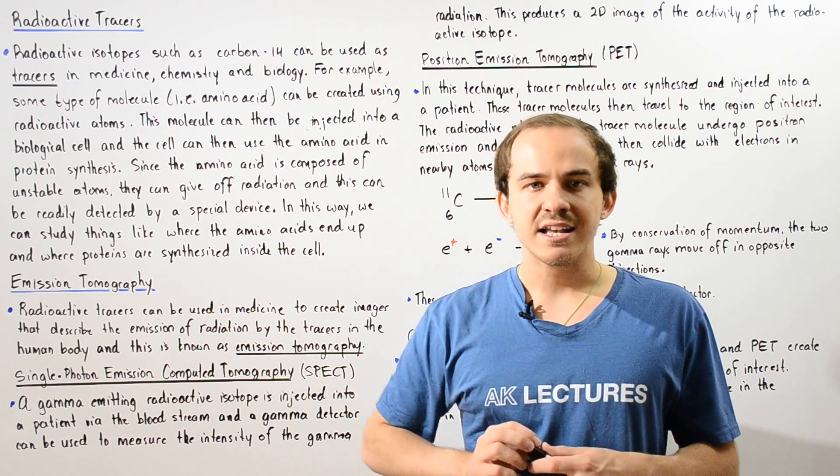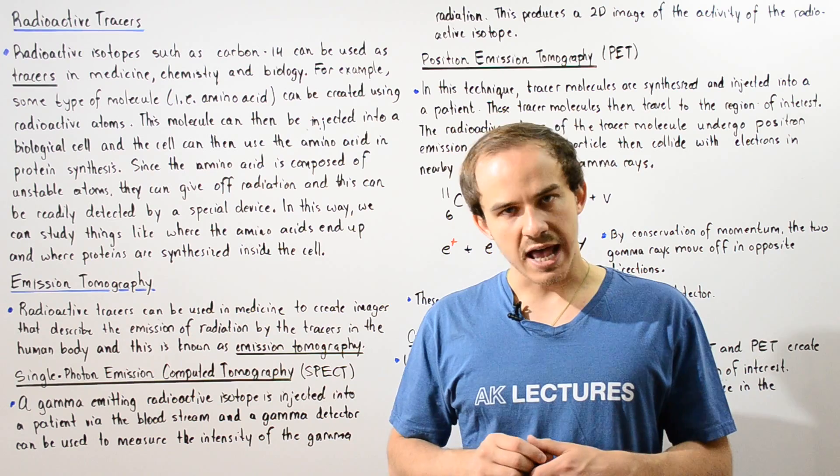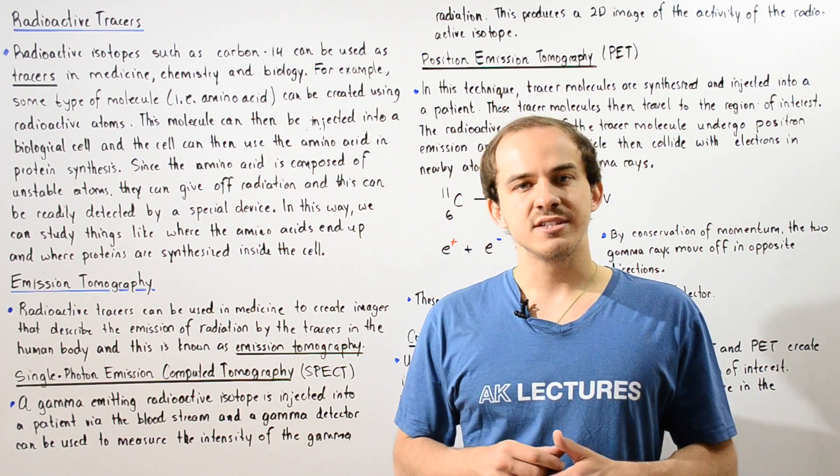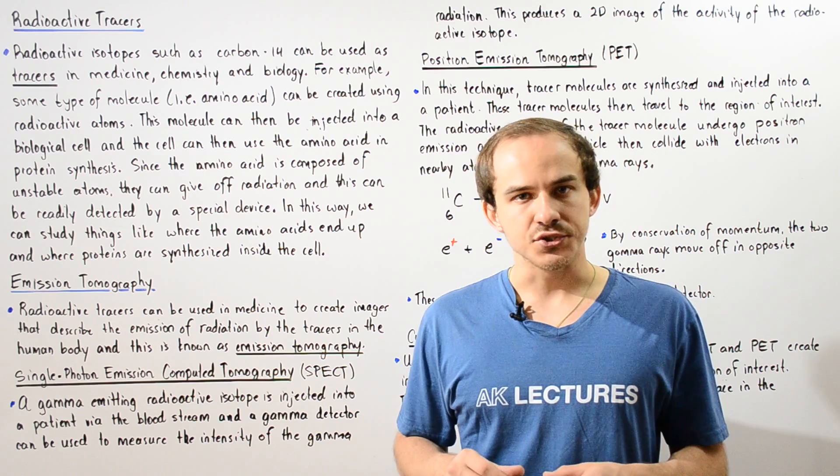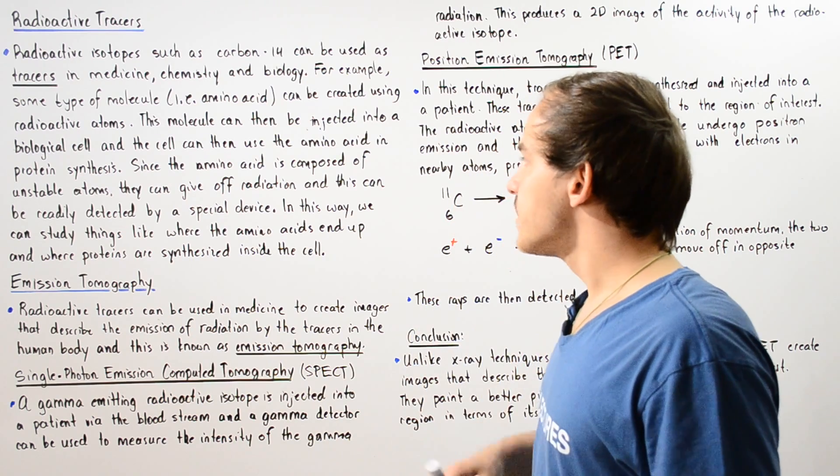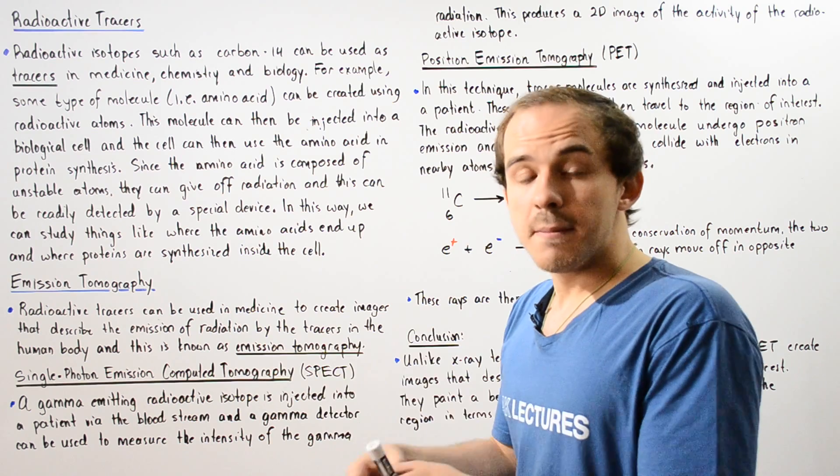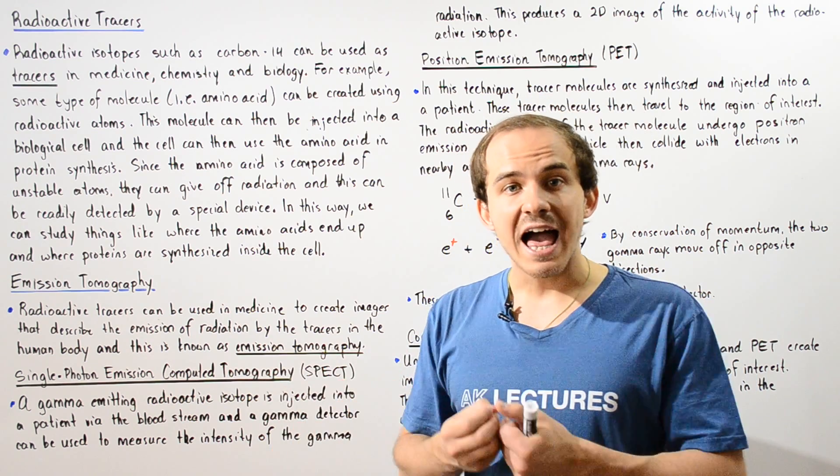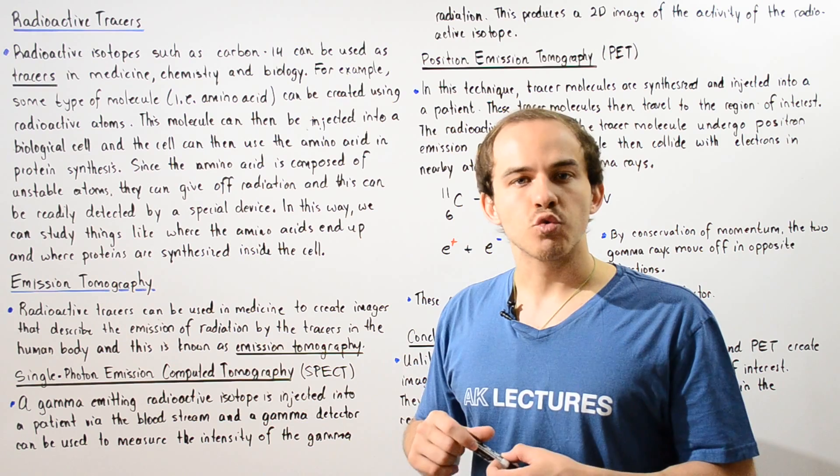This amino acid can then be injected into a biological cell, and that cell can readily use it to synthesize proteins. As the amino acids are used up, because of the unstable atoms they contain, they will give off radiation.